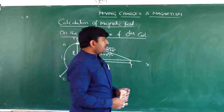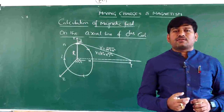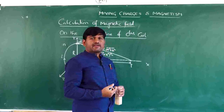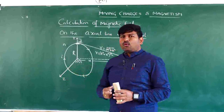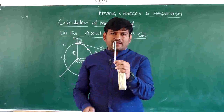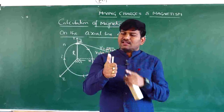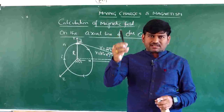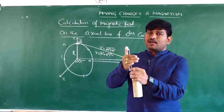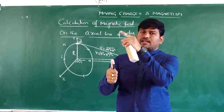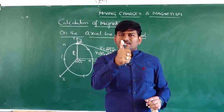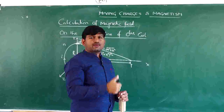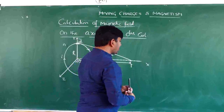Previously, in order to calculate the magnetic field, we used the Biot-Savart law. To find the direction of the magnetic field, we use the right-hand clasp rule. If a current-carrying conductor is present, hold it in your right hand such that the thumb points in the direction of current. Then the fingers encircling the conductor give the direction of the magnetic field. This is called the right-hand clasp rule or right-hand thumb rule.